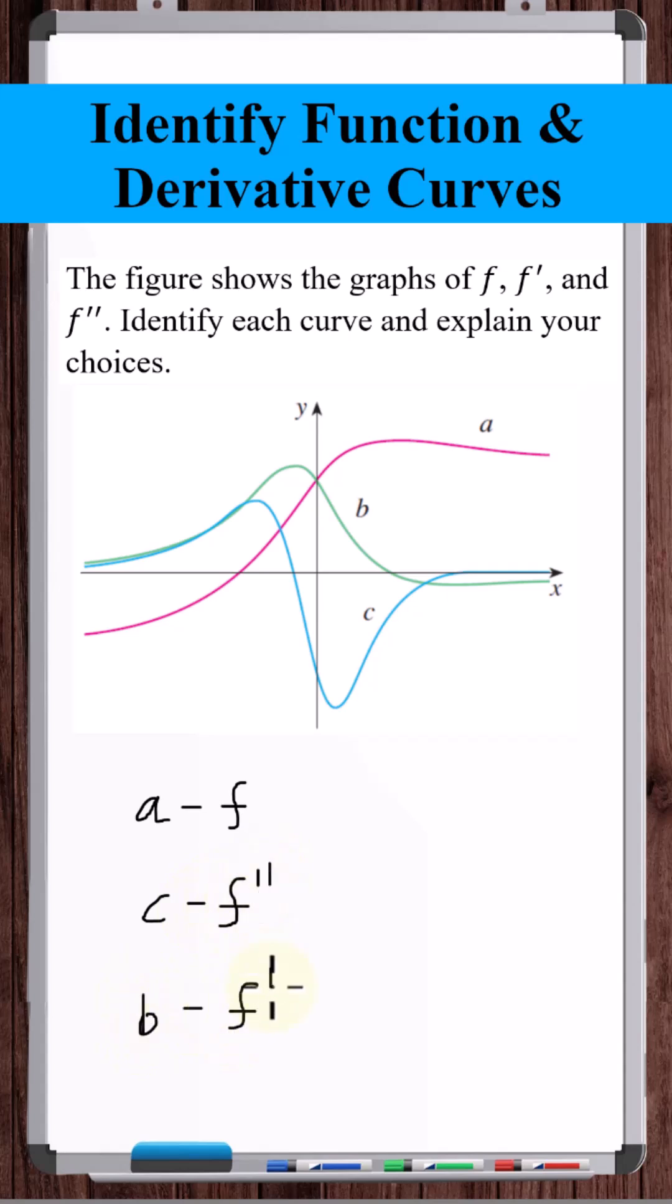That means B is going to be F prime. But let's take a look. We've got a positive slope here. Positive, positive, positive. So B is still positive. The slope goes to zero around here, then becomes negative. There we go. It goes to zero around there, and then it becomes negative.